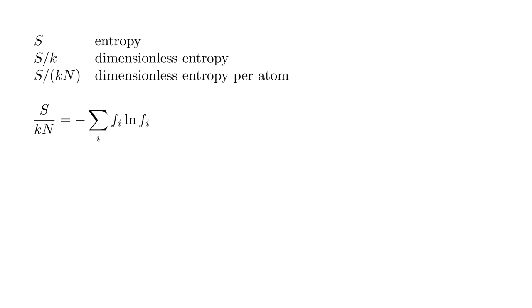For our gas sample, the dimensionless entropy per atom equals minus sum over I, FI log FI. The log of FI is minus epsilon I over K-T minus log Z. We can rearrange this as log Z times sum over I FI plus one over K-T times sum over I FI epsilon I.